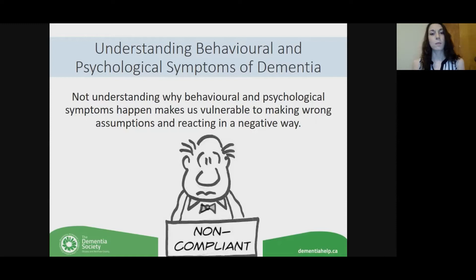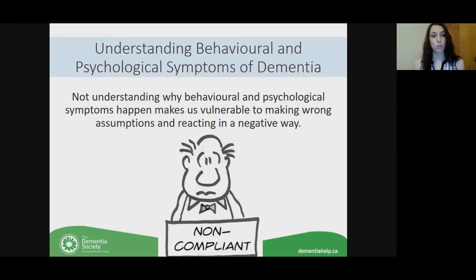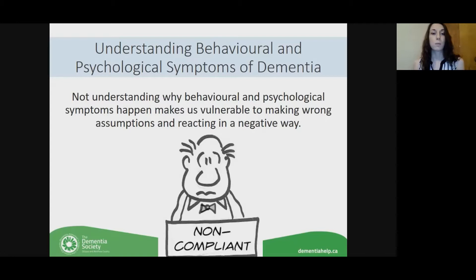By learning more about behavioral and psychological symptoms that come with dementia, we can be better prepared for the future if some of these symptoms occur, and we can also normalize some of the behaviors you're seeing in your loved one currently. Psychological and behavioral symptoms are often the reason why people end up calling us at the Dementia Society. As a care coach, I often talk with caregivers about strategies when someone is noticing these symptoms. Sometimes people are labeled as non-compliant, a faker, or oppositional — but the person living with dementia is just doing their best.